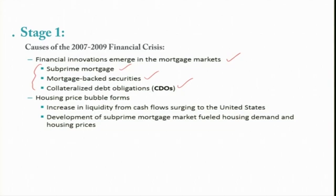Subprime mortgage means giving housing loans to high-risk borrowers — those who are otherwise normally ineligible for prime loans because they are unlikely to repay. But because of financial innovation and certain economic and political developments in the US, subprime mortgage lending was promoted. Then, because of financial innovation, these mortgages were further developed into new financial products called mortgage-backed securities and then further developed into CDOs.